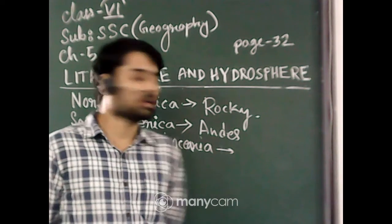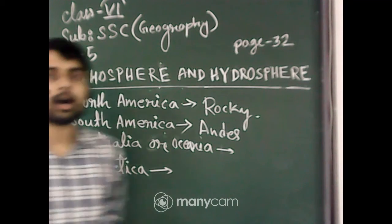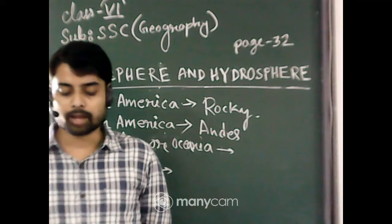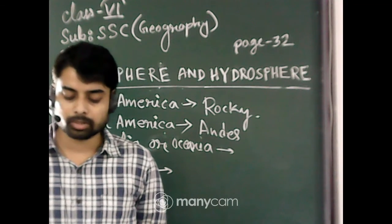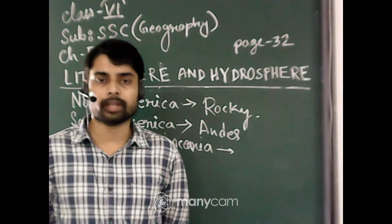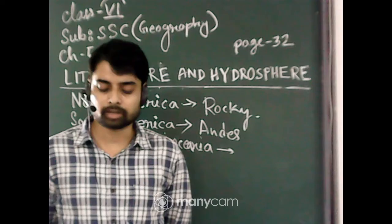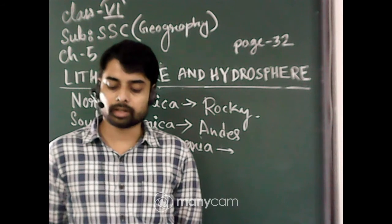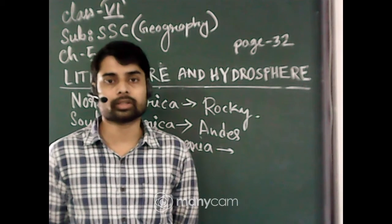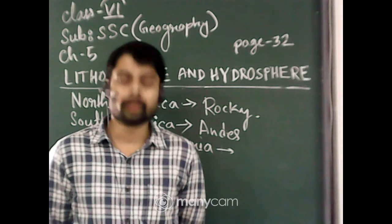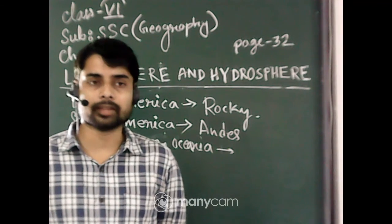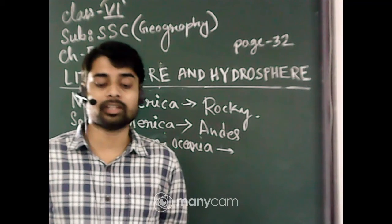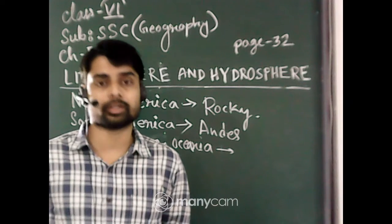The last continent is Antarctica. Antarctica is completely situated in the Southern Hemisphere and is a huge continent — the South Pole lies almost in the middle of Antarctica. Because it is located in the south polar region, it is permanently covered with a thick layer of ice all year round. In some places, the depth of the ice is also one kilometer deep.